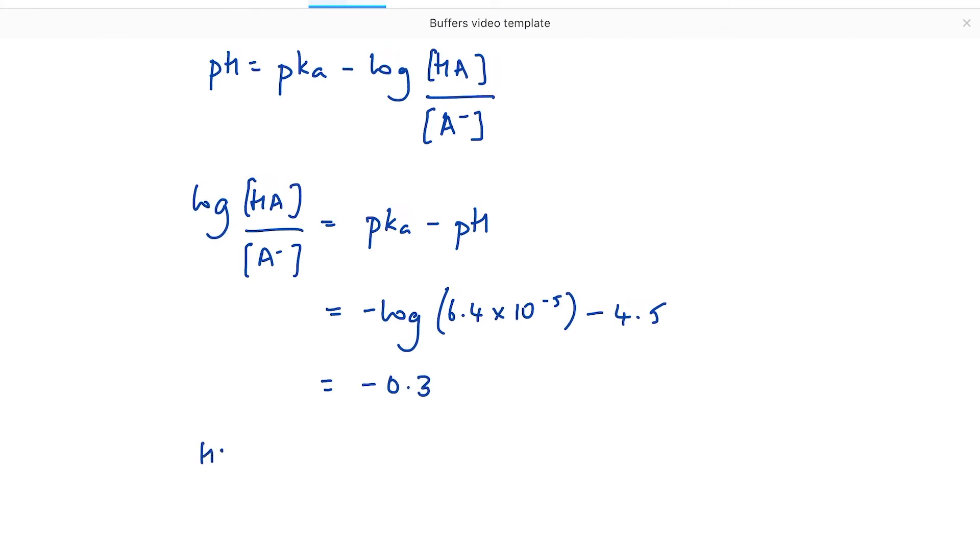So the ratio of HA to A- in terms of concentrations is equal to 10 to the power of minus 0.3, which equals 0.5. So again, the ratio of acid to salt is 0.5 to 1. That is what we mean by ratio here.